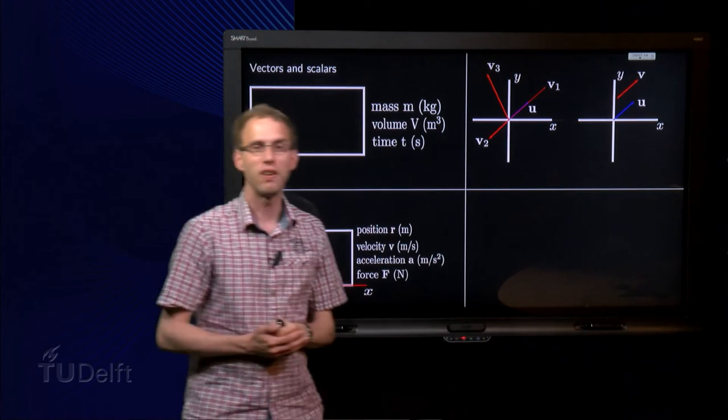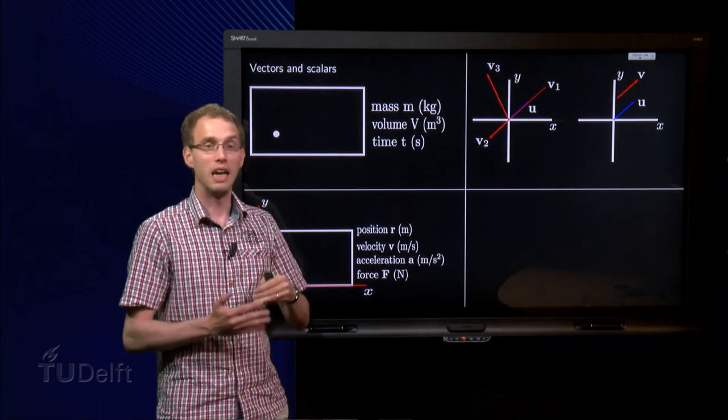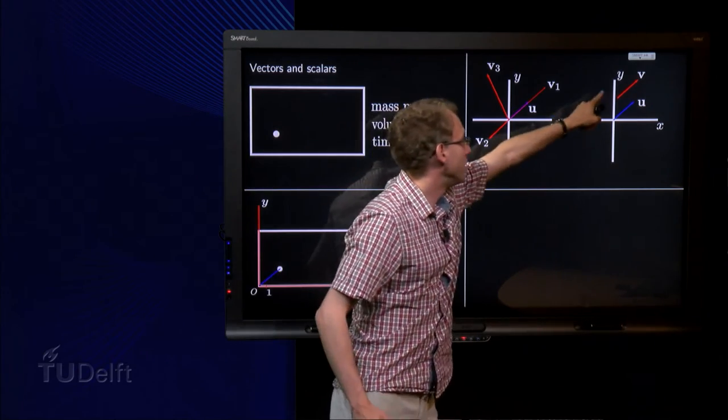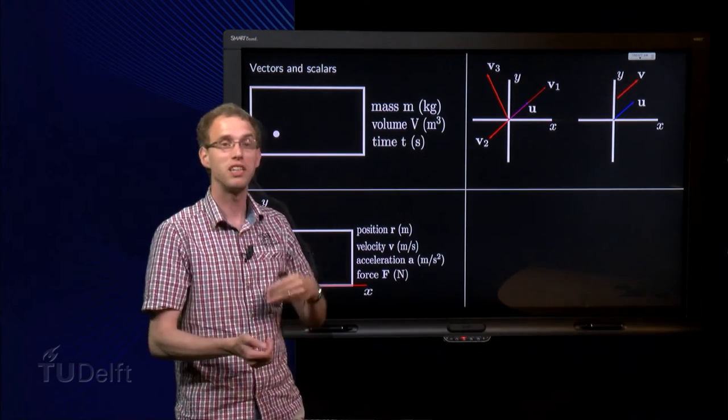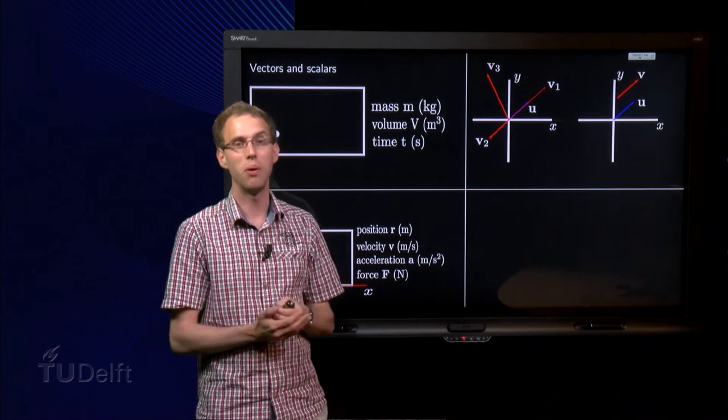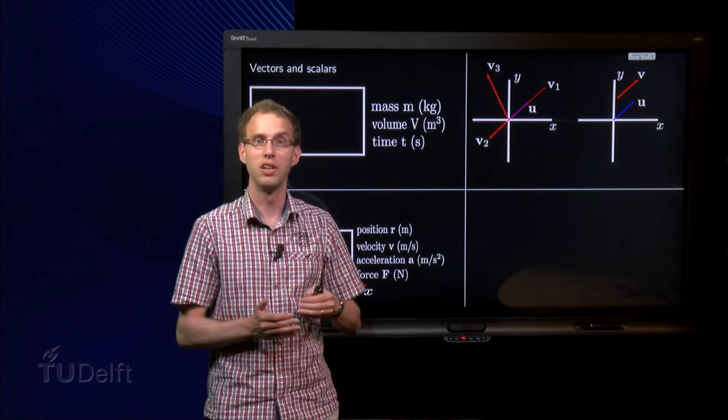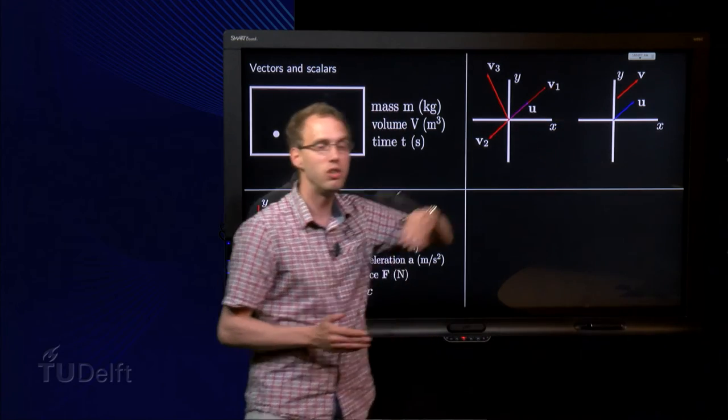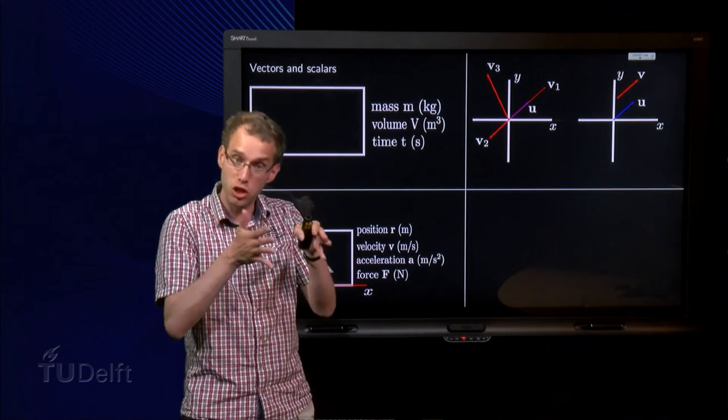But how about those vectors u and v? Linear algebra will call these u and v the same, same magnitude, same direction, even though they do not have the same starting point. Linear algebra will usually start just in the origin.